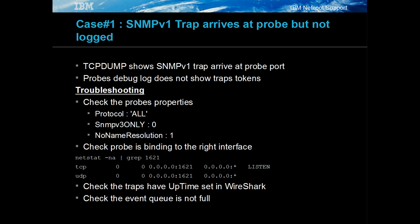In this example for SNMP V1 traps, the traps are seen in the PCAP file arriving at the probe port. There are a number of checks that can be performed to determine why the traps are being lost in the probe.